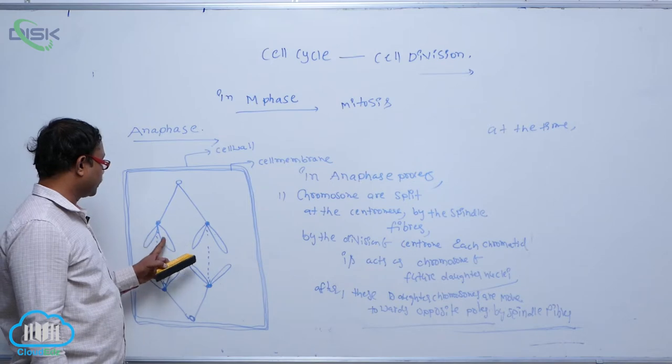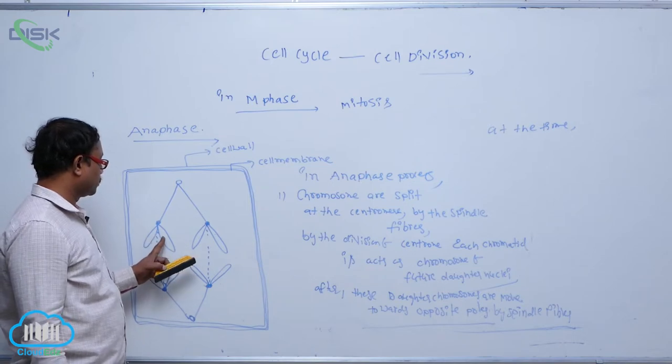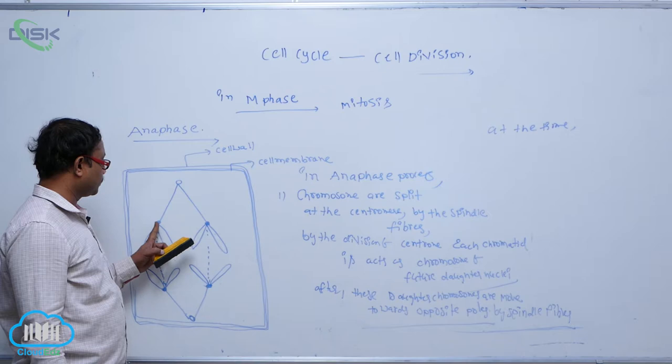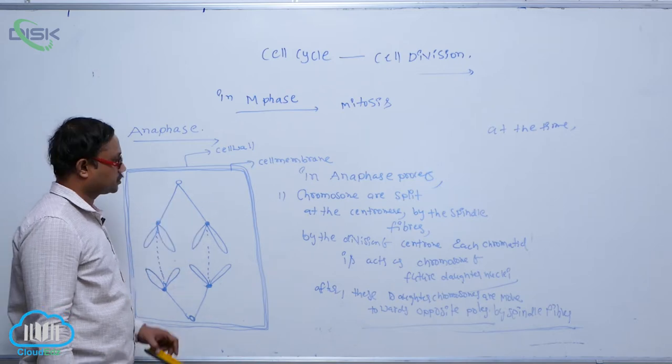Just like tails, the chromatids are present at the center, while the centromeres are present towards the poles.